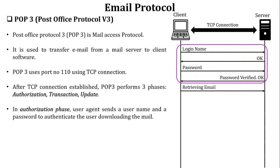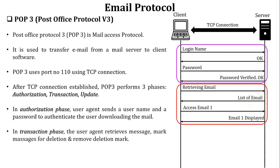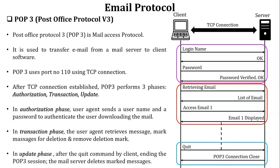After login, the user retrieves emails from the server. The list of emails is sent by the server to the client. The client accesses an email from the list, and that email is downloaded at the client side. The user can then send, forward, reply, or delete the mail — this is the transaction phase. After the transaction phase, the user sends a quit command to the server, the POP3 connection is closed, and the TCP connection is released — this is the update phase, in which the mail server deletes the marked messages.